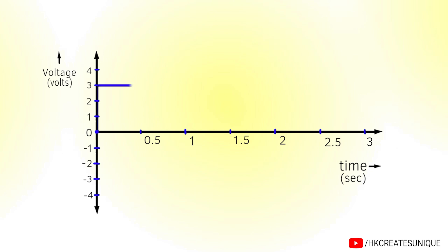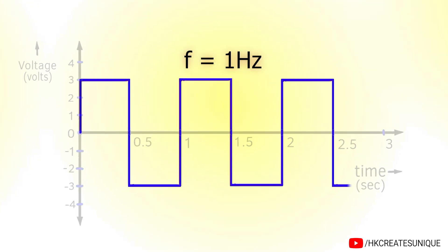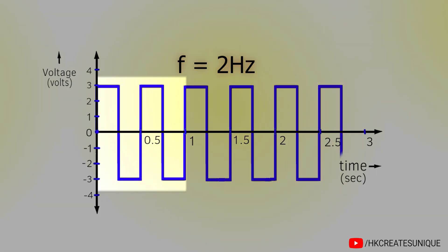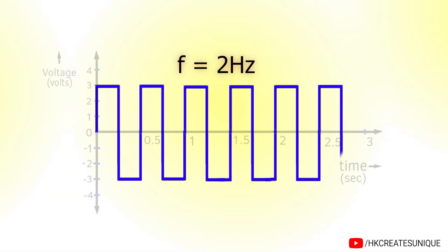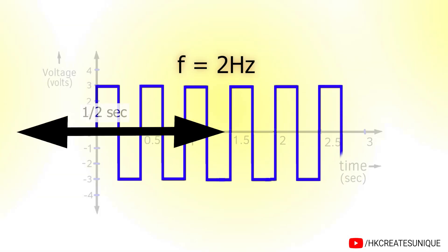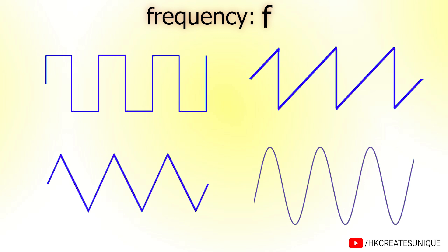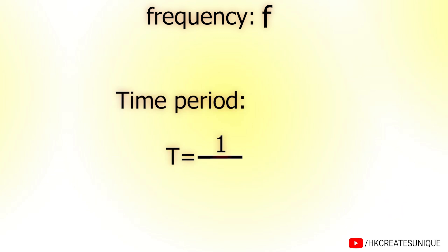The unit of frequency is cycles per second or Hertz named after Heinrich Hertz. If frequency is one Hertz, one cycle is completed in one second. So time period is one second. If frequency is two Hertz, two cycles are completed in one second, and therefore time period will be half a second. So for any waveform having frequency f, the time period is equal to 1 divided by f.